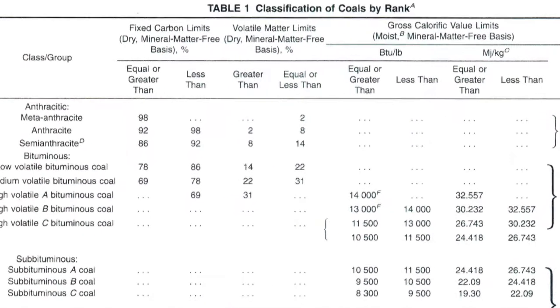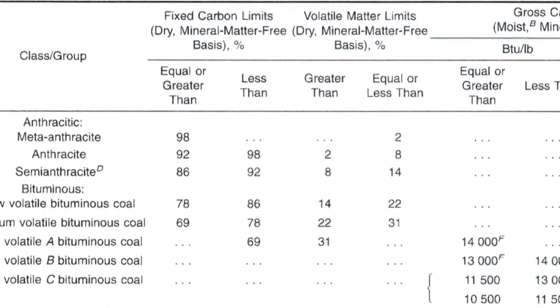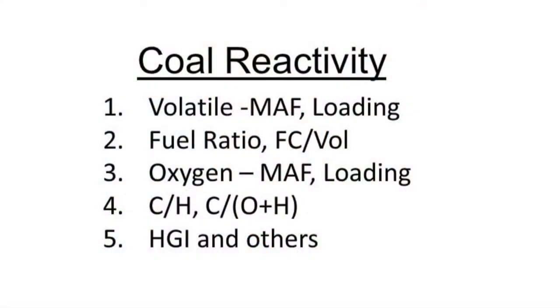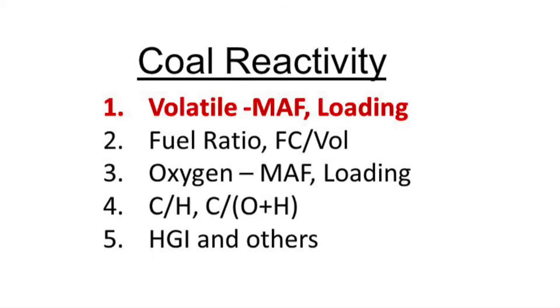In other words, anthracite, bituminous, sub-bituminous, lignite — that type of information comes from the same data we'll use to look at reactivity. There'll be five areas we'll be looking at: the volatile matter, the fuel ratio, the oxygen content, moisture ash-free BTU, carbon to hydrogen ratios and other ratios, and then the hard Grove grindability index influence on some coals. We'll start with the volatile matter.